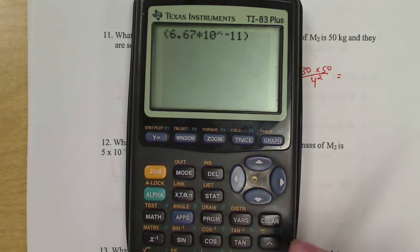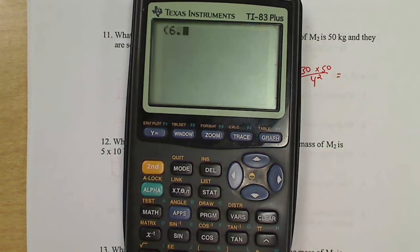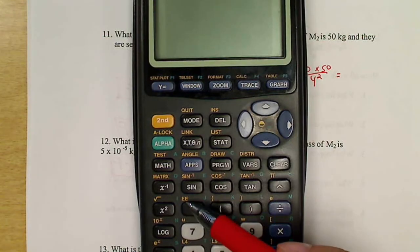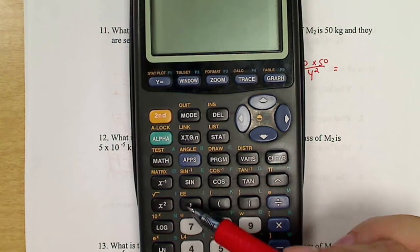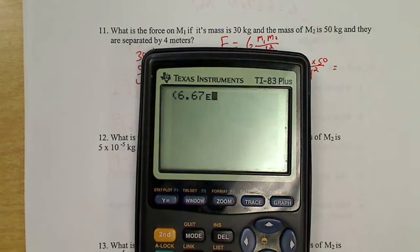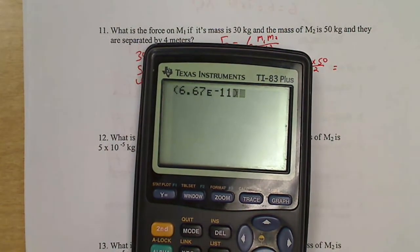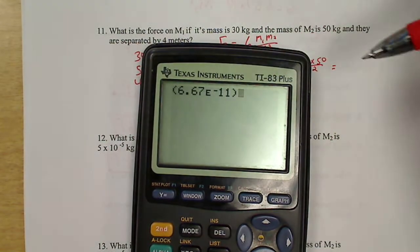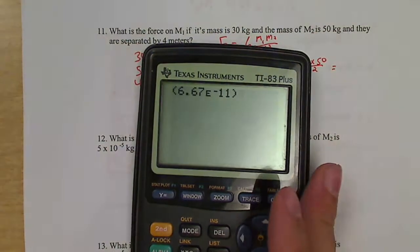There's a shorthand way to do it. I can just do 6.67, then there's this yellow E right here. So I can hit second E. That's where this little E comes from. E negative 11. That'll work too. So this E stands for the times 10 to the. That's how it's translated.